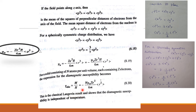This is the classical Langevin result. It shows that the diamagnetic susceptibility is independent of temperature. This is a very important expression that can be asked in exams. Study well and see you in the next class.